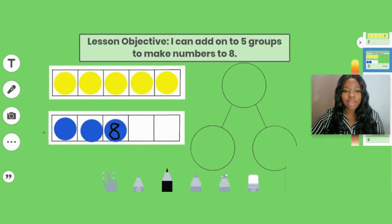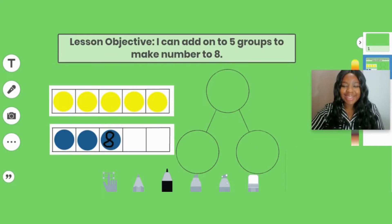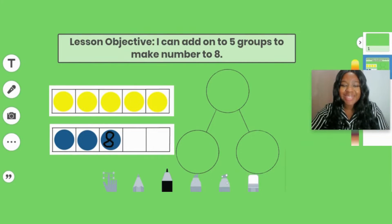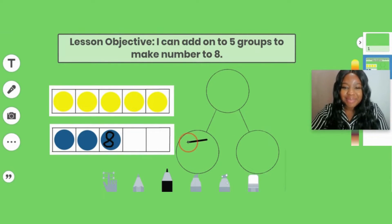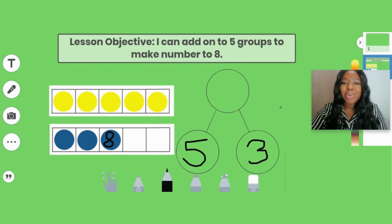So we have five, and then how many do we add in order to get eight? We added three. Since we have everything organized, we can see that three very easily. Now we are going to create a number bond to match our five group. How many did we start with? We started with five, so on our first part we put the number five. Our second part was three. Now we need our whole — what was our whole number? It was eight.